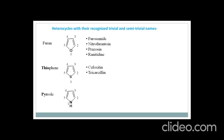The examples of drugs which have this pyrrole ring are nicotine, procyclidine, and tolmetine. Nicotine is a parasympathomimetic drug, procyclidine is an anticholinergic drug, and tolmetine is an example of an anti-inflammatory drug.